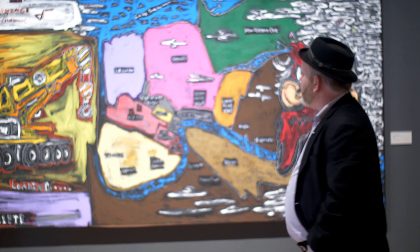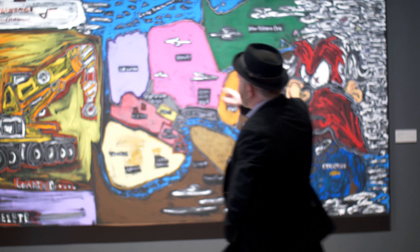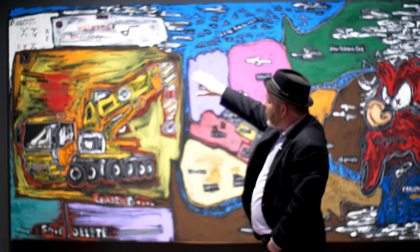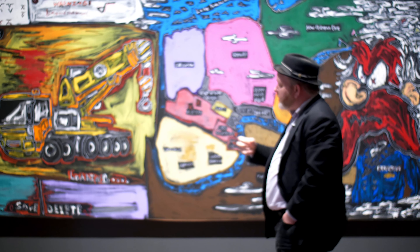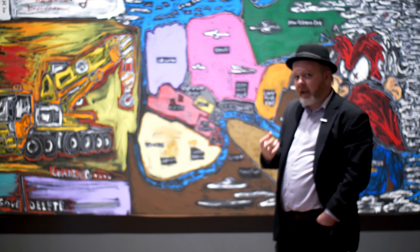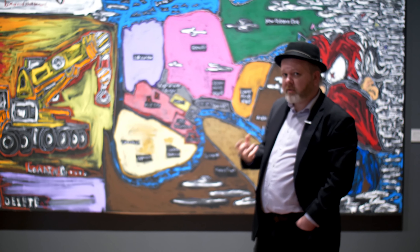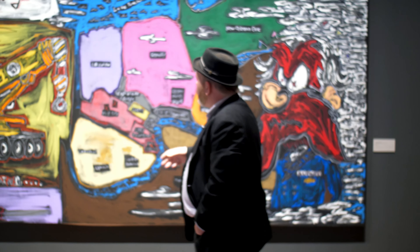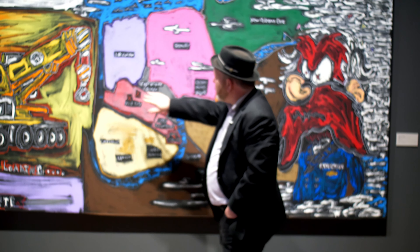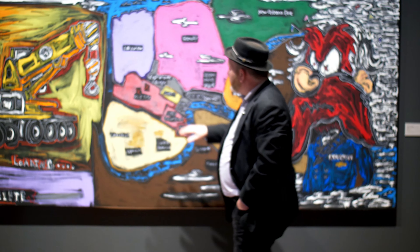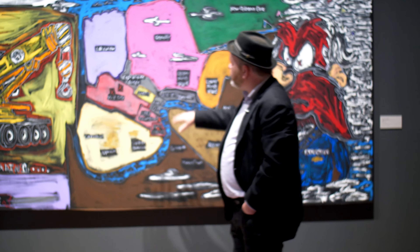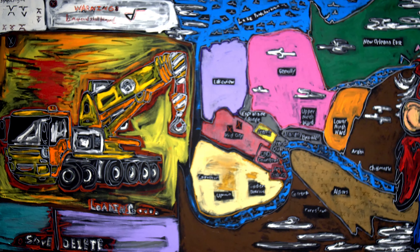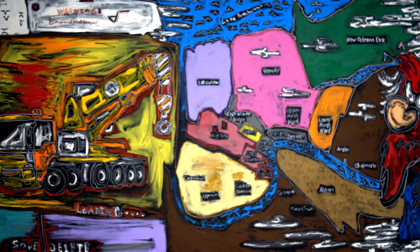With this piece you'll see he's using the language of computers to write the code — the code that the viewer really has to crack to truly understand this piece. Here we have the placement of the four Confederate monuments that the city was struggling with removing at the time.